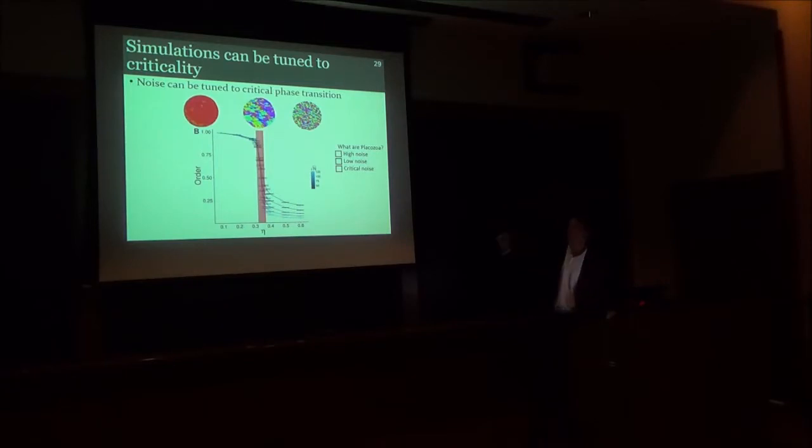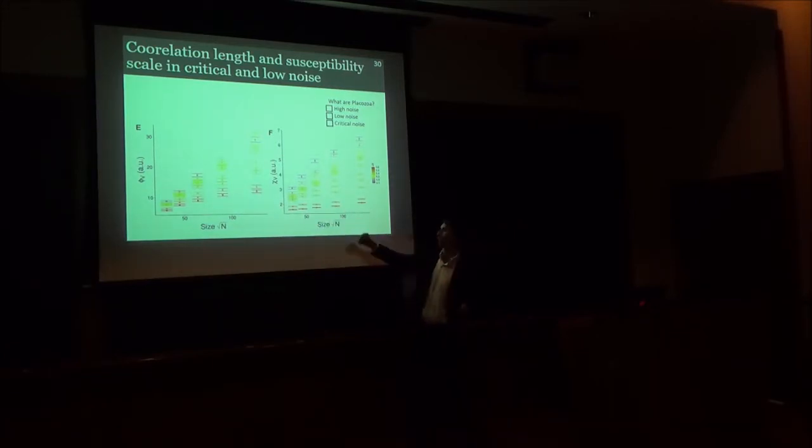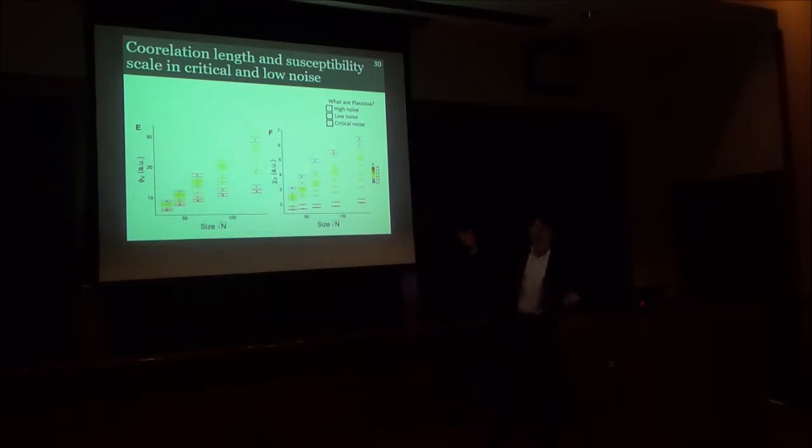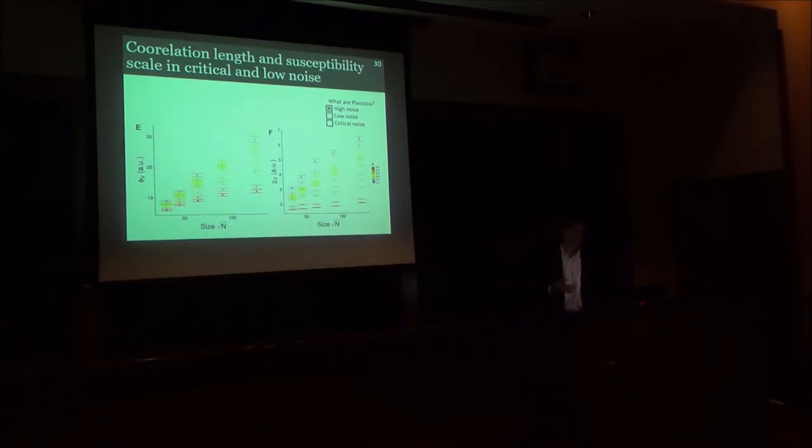Moving back to our question. Which of these three systems best matches what we observe in placozoa in this different class? For instance, if we look at the correlation length or the susceptibility measures for systems with different noise parameters, here showing different colors, what we see is that in the low noise case or in the critical noise case, you have a sort of linear scaling of the correlation length and this bilinear scaling with the susceptibility. But if you look at the high noise case, you see that there is this attenuation of the correlation length. And therefore, we can conclude that the high noise case does not actually match what we observe empirically.